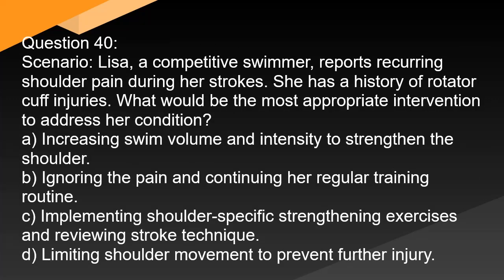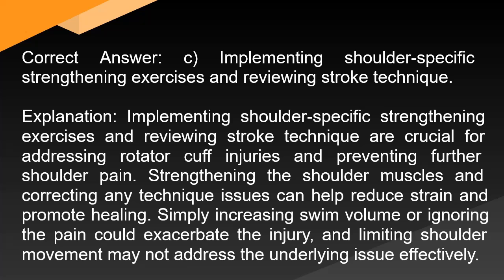Question 40 — Scenario: Lisa, a competitive swimmer, reports recurring shoulder pain during her strokes. She has a history of rotator cuff injuries. What would be the most appropriate intervention? A. Increasing swim volume and intensity to strengthen the shoulder. B. Ignoring the pain and continuing her regular training routine. C. Implementing shoulder-specific strengthening exercises and reviewing stroke technique. D. Limiting shoulder movement to prevent further injury. Correct answer: C. Implementing shoulder-specific strengthening exercises and reviewing stroke technique are crucial for addressing rotator cuff injuries and preventing further shoulder pain. Strengthening the shoulder muscles and correcting technique issues can help reduce strain and promote healing. Simply increasing swim volume or ignoring the pain could exacerbate the injury.